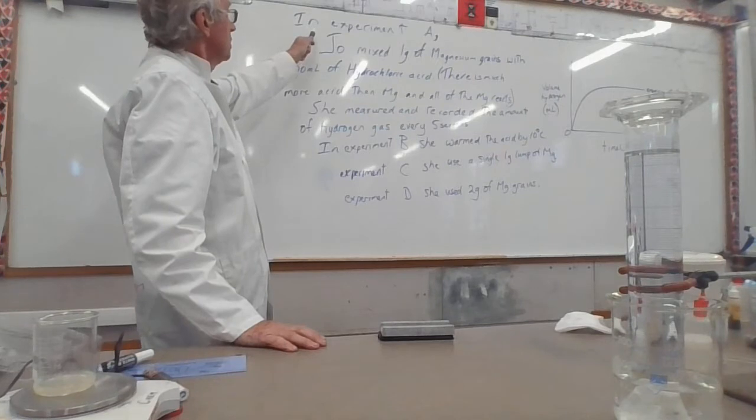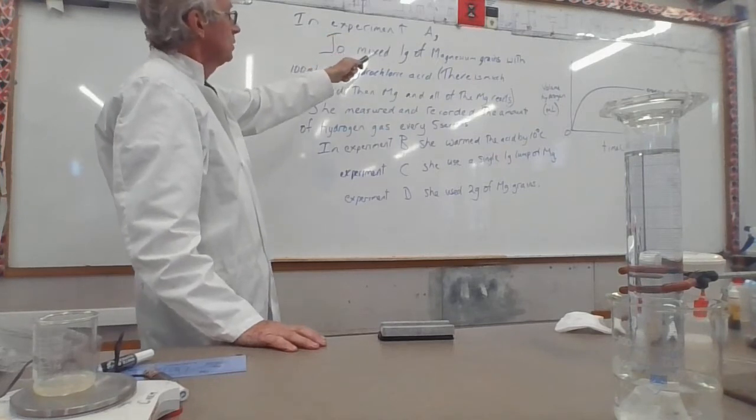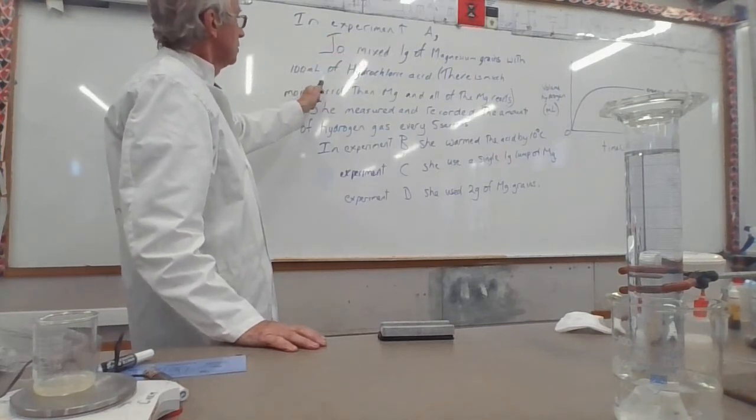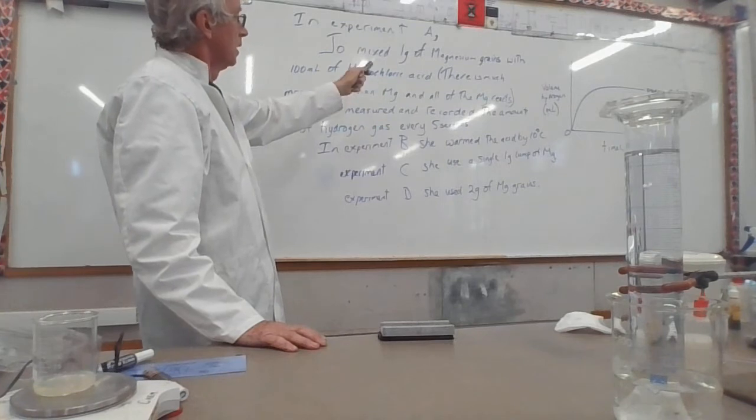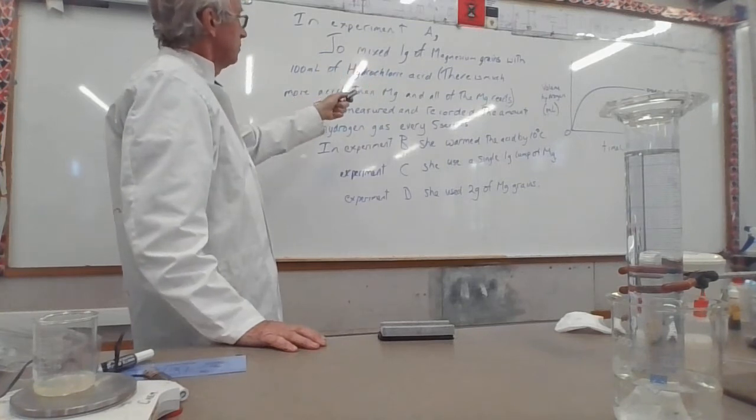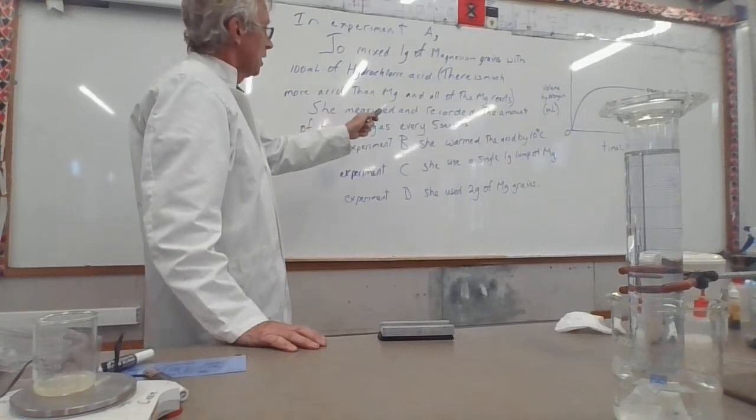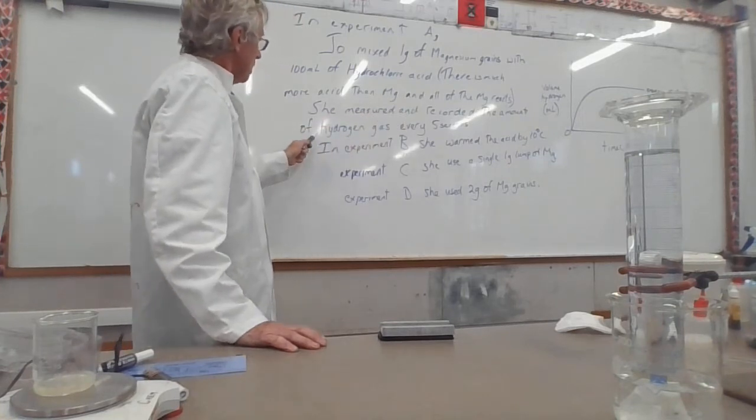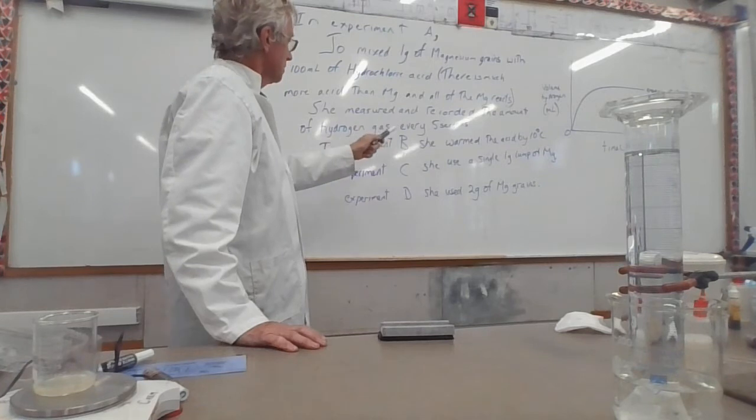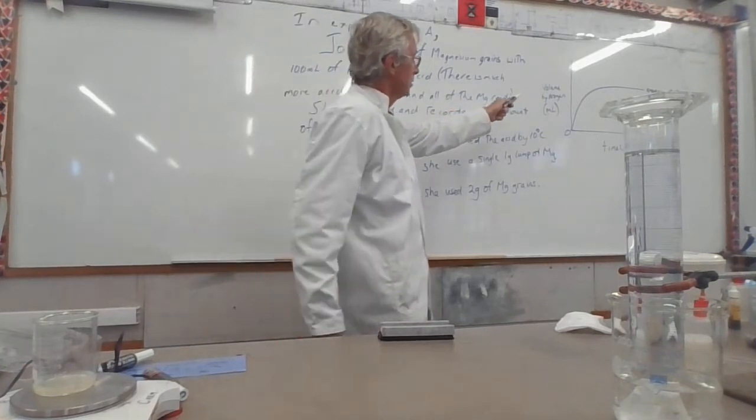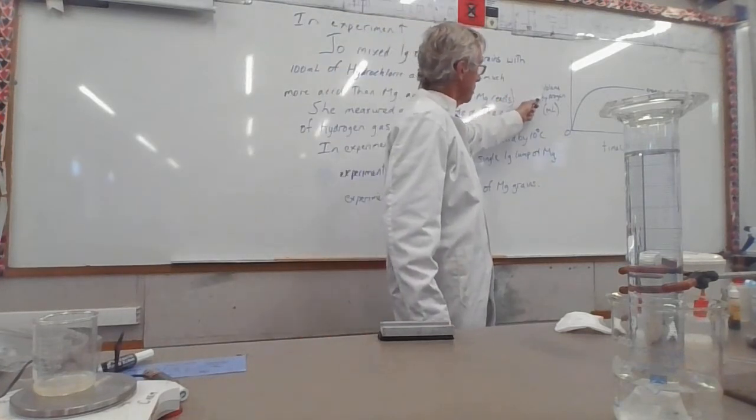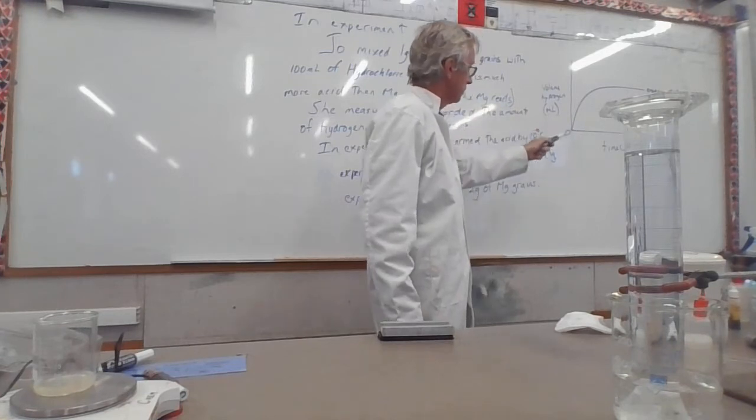A typical question: in Experiment A, Jo mixed 1 gram of magnesium grains with 100 mL of hydrochloric acid. There is much more acid than magnesium and all of the magnesium reacts. She measured and recorded the amount of hydrogen gas every 5 seconds. You can see the graph over here, the amount of hydrogen gas, the volume of hydrogen and the time there.